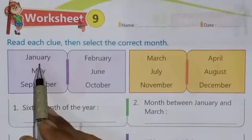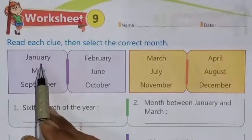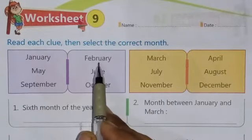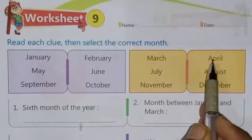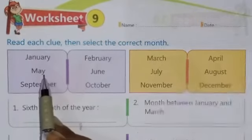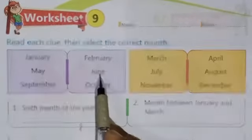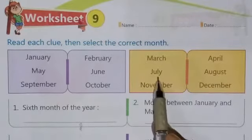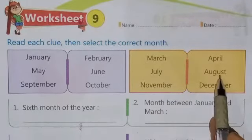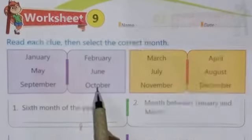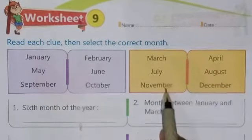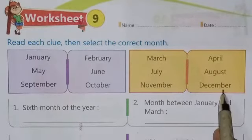The first month is January, February, March, April, May, June, July, August, September, October, November, and December.